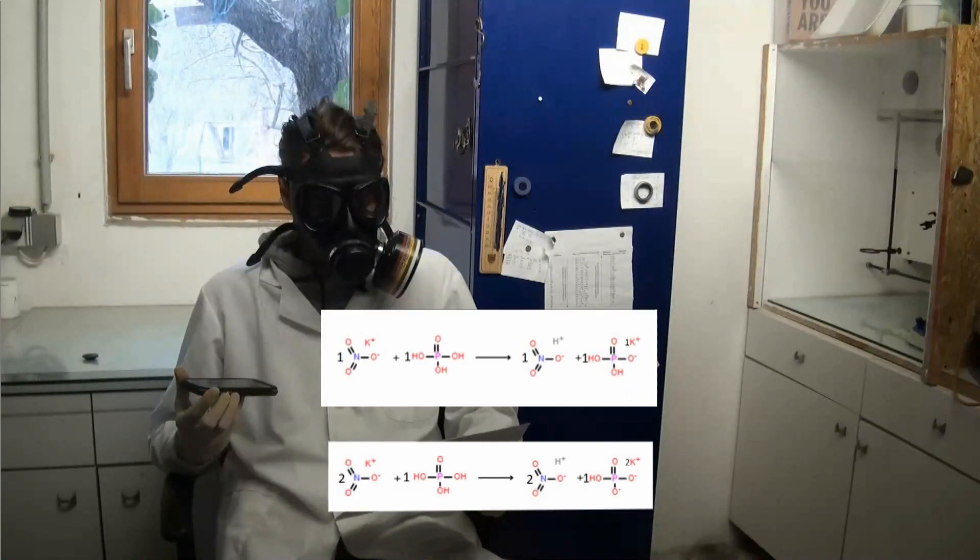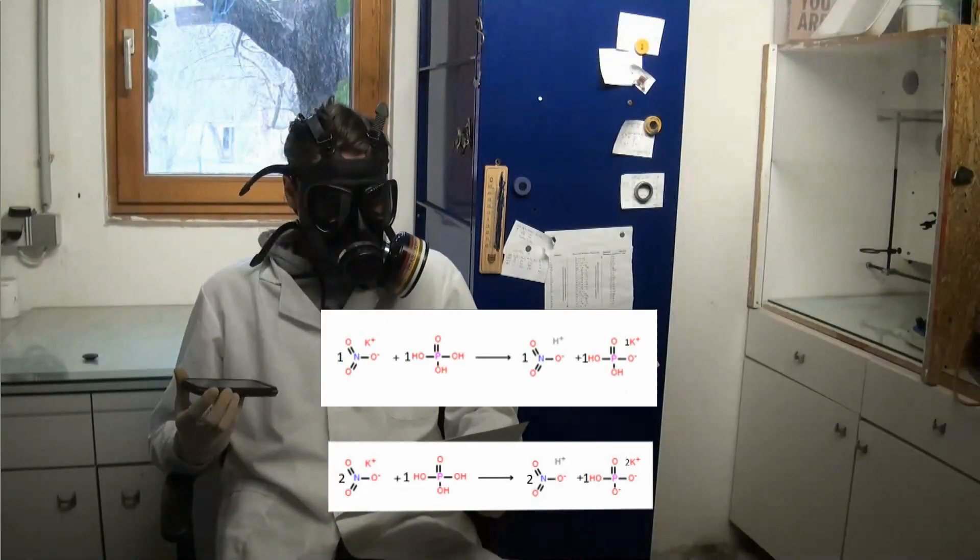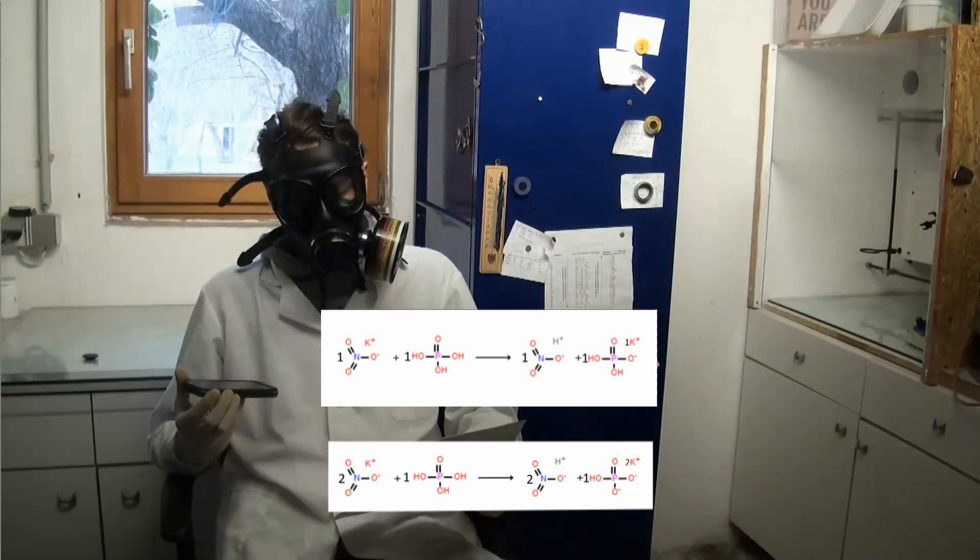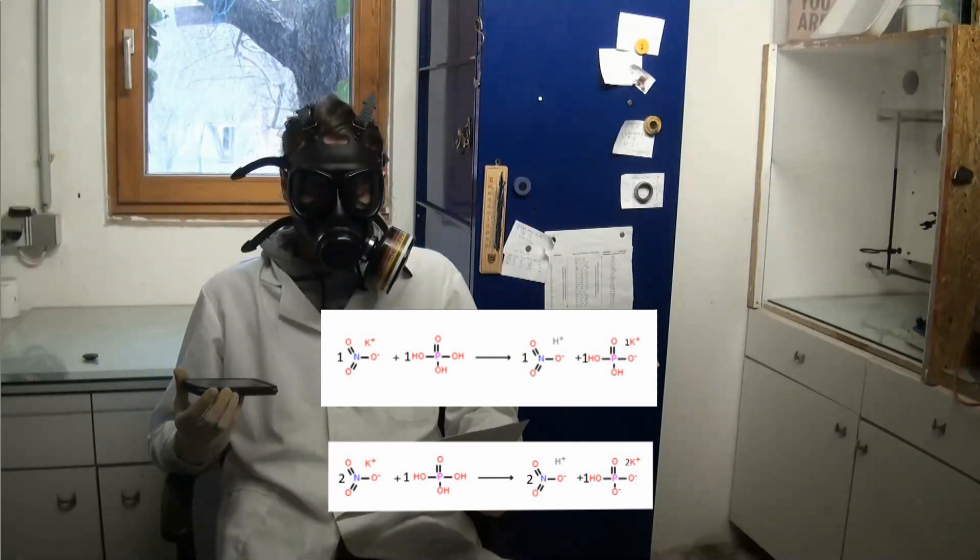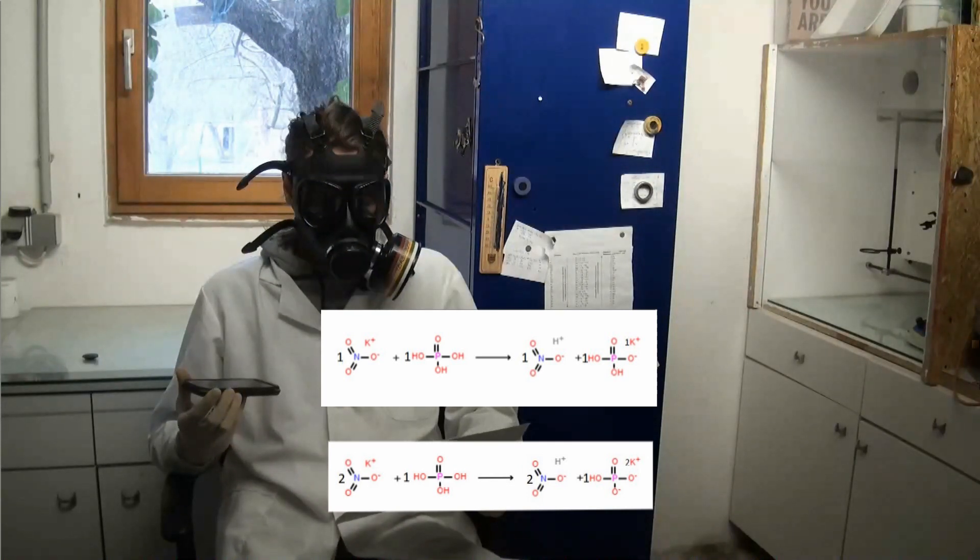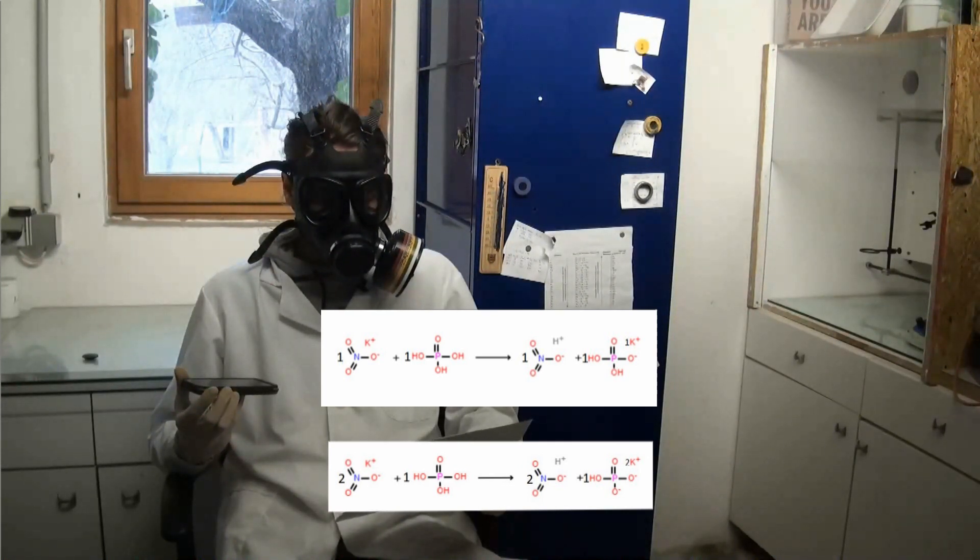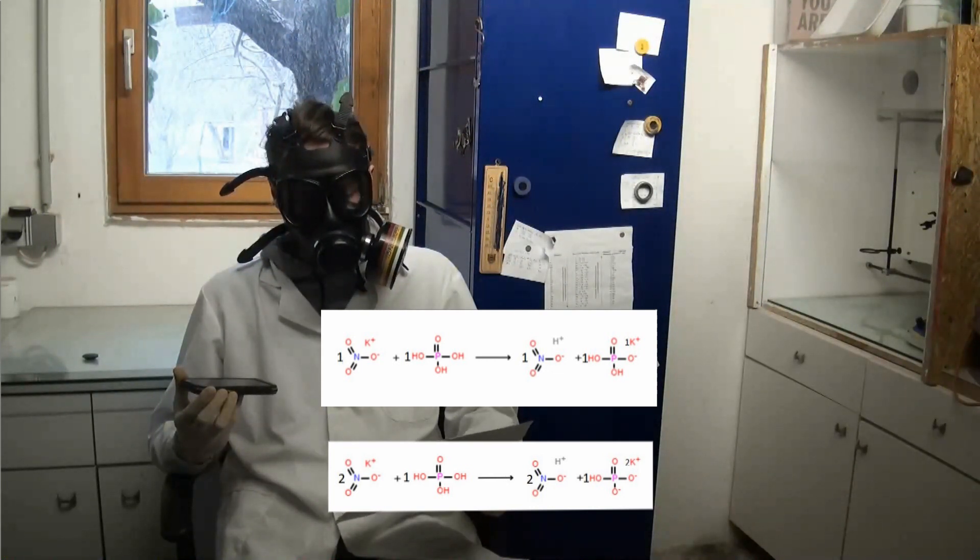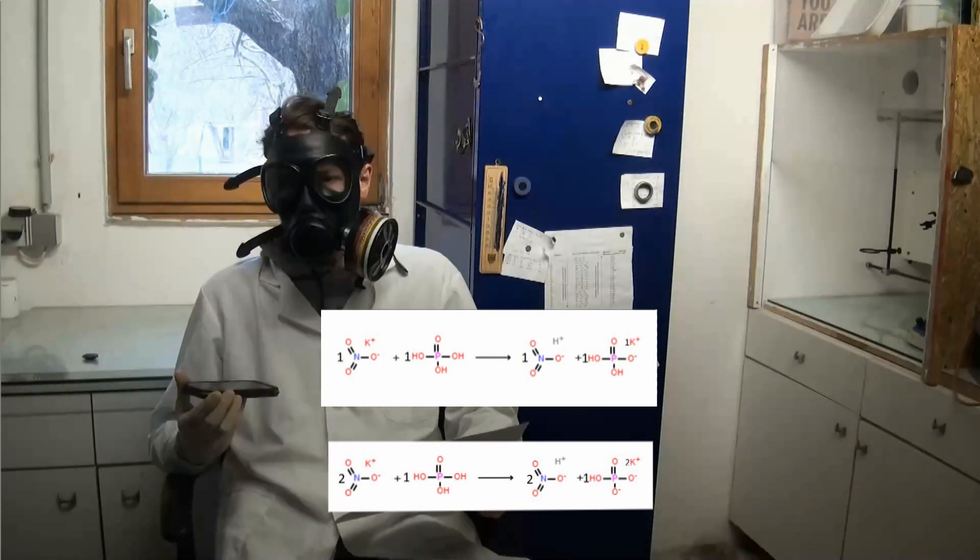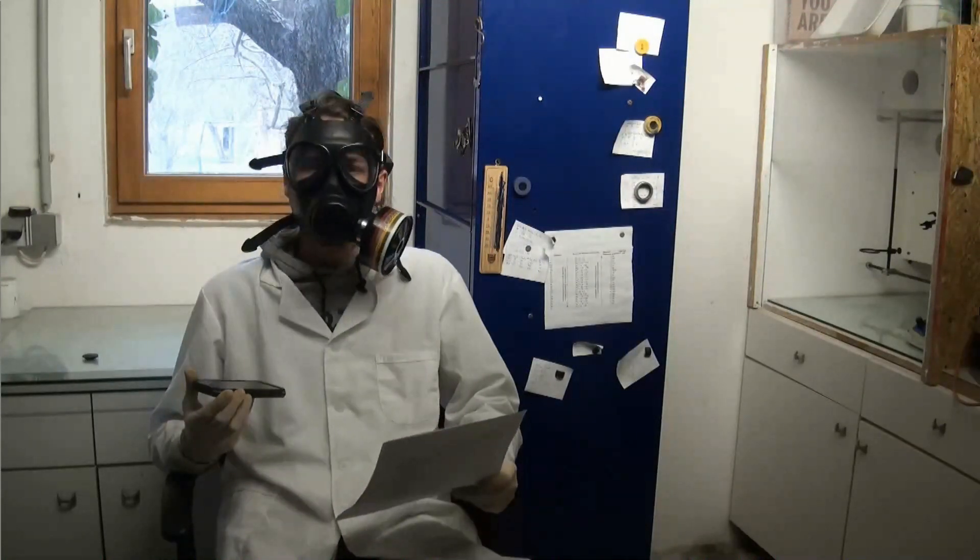But it is also possible that phosphoric acid is not strong enough for this and only reacts with one or two molecules of potassium nitrate, forming one or two molecules of nitric acid and mono-potassium or di-potassium phosphate. But this is something we will find out later.